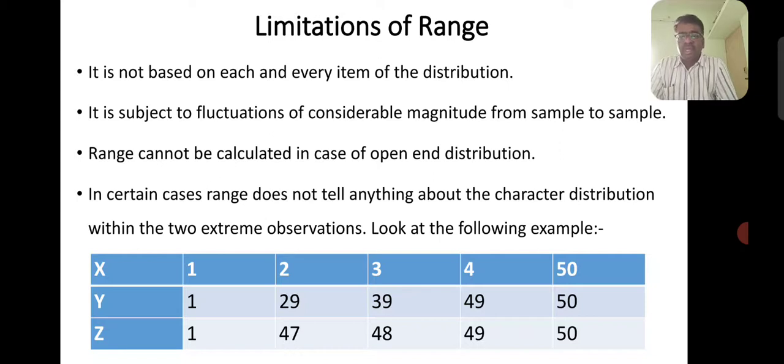Second point, it is subject to fluctuations of considerable magnitude from sample to sample. Range cannot be calculated in case of open end distribution. We cannot decide which is the smallest value, so it is difficult to calculate range in the case of open distribution.